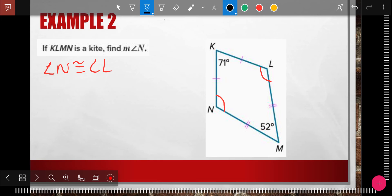Also, the shape has four sides. So 4 minus 2 times 180 equals 360. All right. 2 times 180 is 360. So the whole thing has 360 degrees in it. Right now, I have 71 and 52. So 71 plus 52 equals 123 degrees.